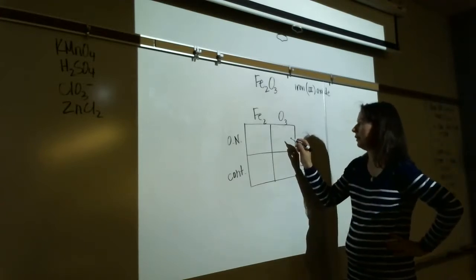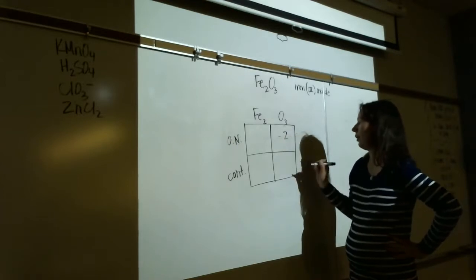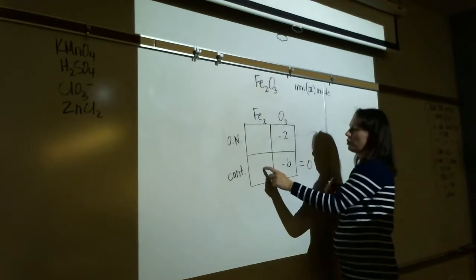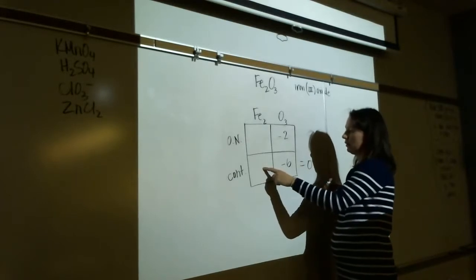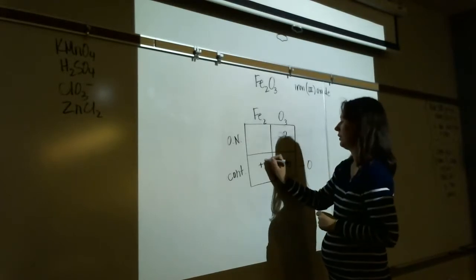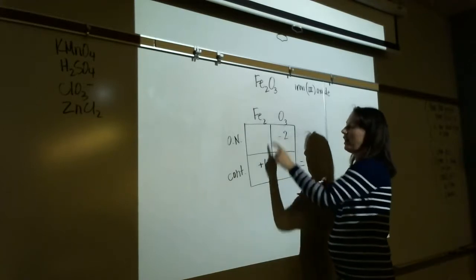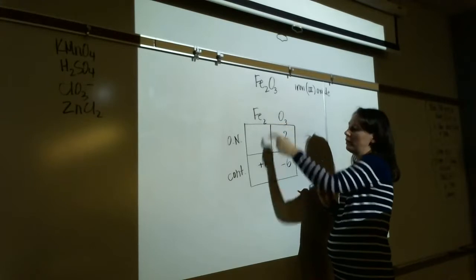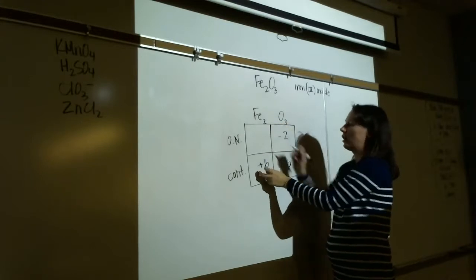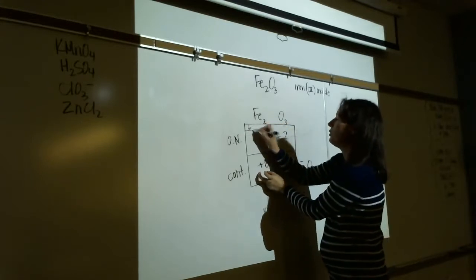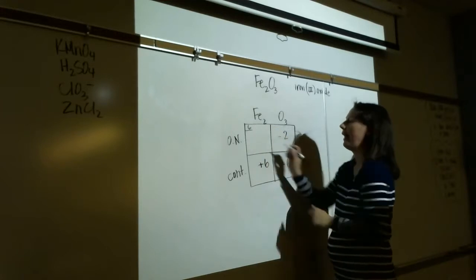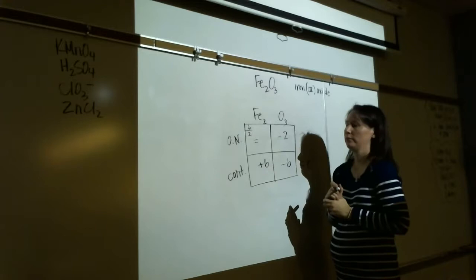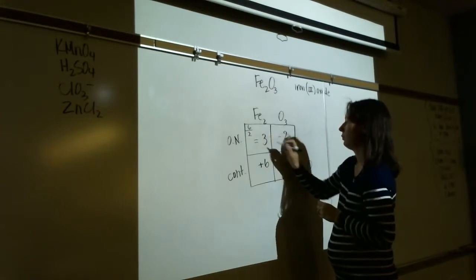Copper(II) nitrate: no rules for copper (transition metal). Start with the always rule — oxygen is always -2. Six oxygens contribute -12. Then use the usually rule for nitrogen — group 5, usually +5 — contributing +10. So copper must be +2. Oxidation numbers: Cu=+2, N=+5, O=-2.